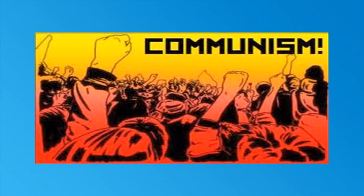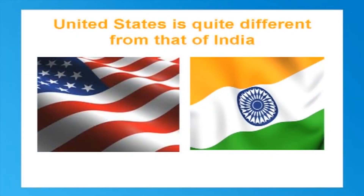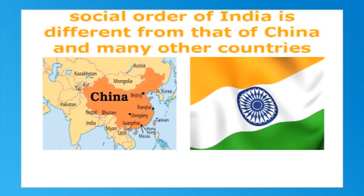Social order further means how the political system of the society functions. Assuming that there is democracy in the country, the political order also forms part of the social order. However, if there are different political systems like monarchies, socialism or communism, the social order may also be different. For example, the social order of the United States is quite different from that of India, although both countries are democracies. Similarly, the social order of India is different from that of China and many other countries. Thus, the social order may differ from country to country.